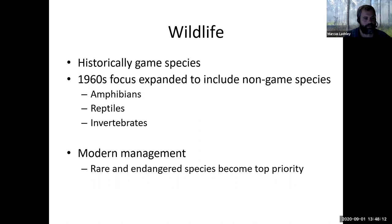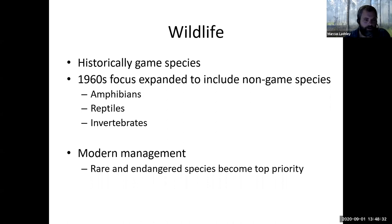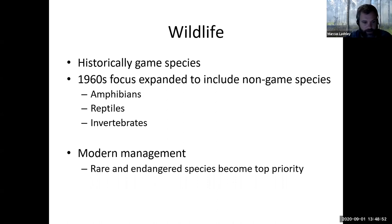The red-cockaded woodpecker and the gopher tortoise are pretty commonly used sentinel species to understand how well a longleaf pine ecosystem is functioning. In the last couple of decades, these species have become a real top priority. The Endangered Species Act in particular has necessitated that we focus on those species on public lands, and for that reason they've become top priority and are used as an indicator of how well a system is functioning.